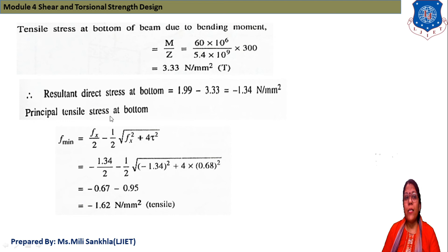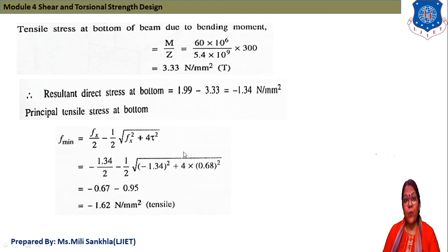Principal tensile stress at the bottom: F_min = Fx/2 − (1/2)√(Fx² + 4τ²) = −1.34/2 − (1/2)√(1.34² + 4 × 0.68²). After calculation, the principal tensile stress at the bottom is −1.62 N/mm².